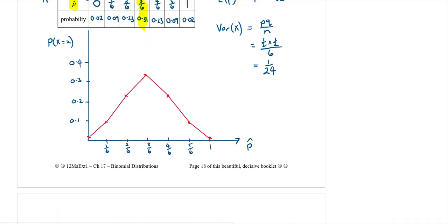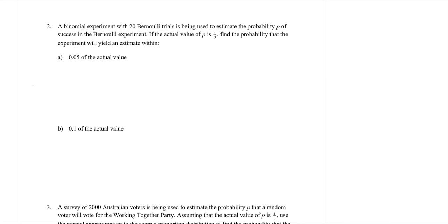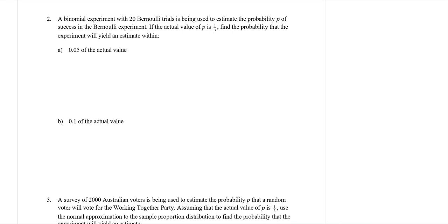Question two: a binomial experiment with 20 Bernoulli trials is being used to estimate the probability p of success. If the actual value of p is 1/3, find the probability that the experiment will yield an estimate within 0.05 of the actual value. So p = 1/3, approximately 0.333, and we have 20 trials.